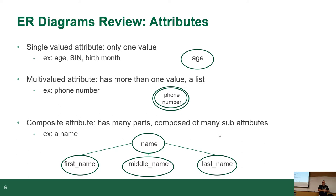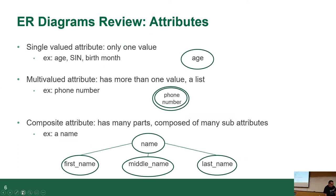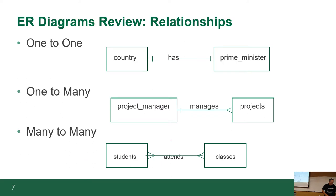The other way to display a composite attribute is with parentheses inside. Either of them are acceptable. There are three kinds of relationships: one-to-one, one-to-many, and many-to-many. Make sure you know what the different symbols are. An example of one-to-one is a country has a prime minister or president. A project manager can manage multiple projects, and students attend multiple classes and each class has multiple students.